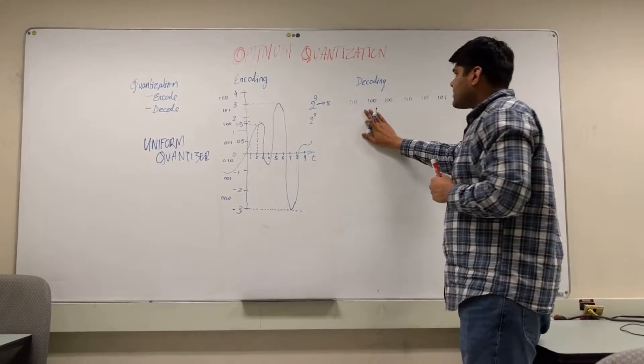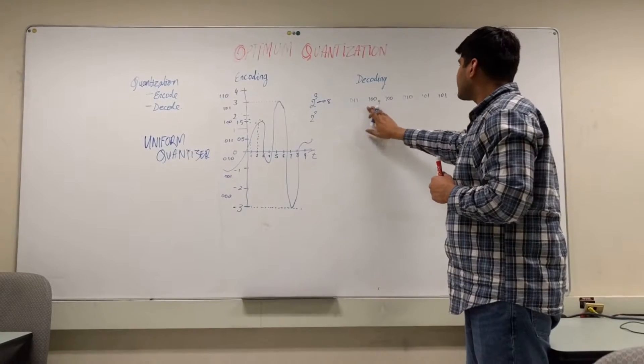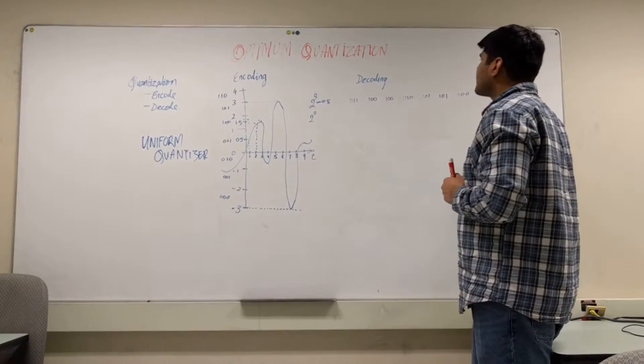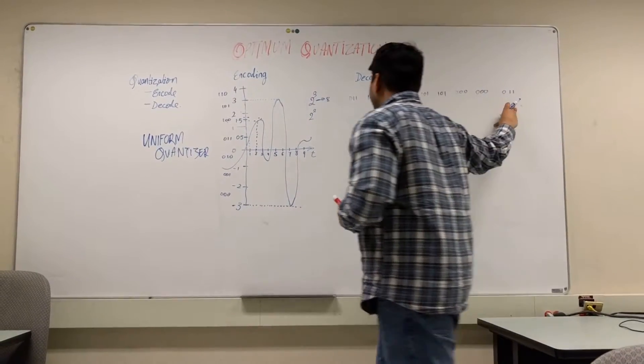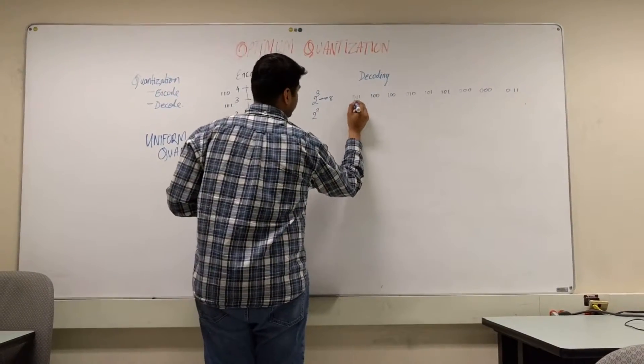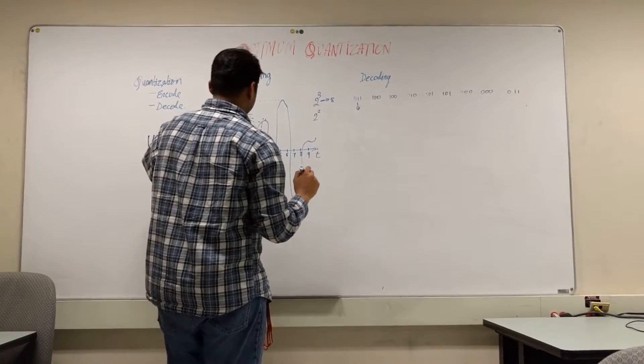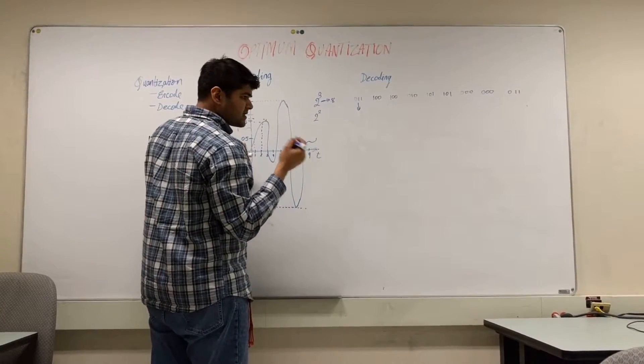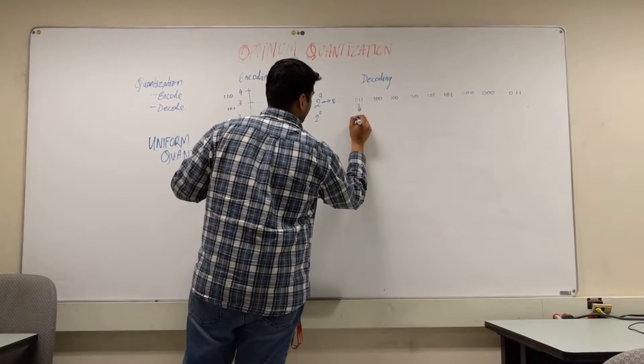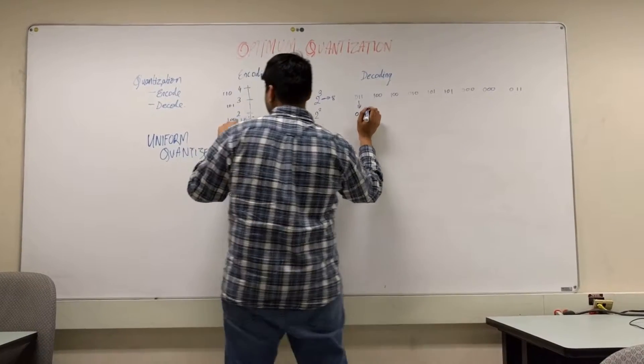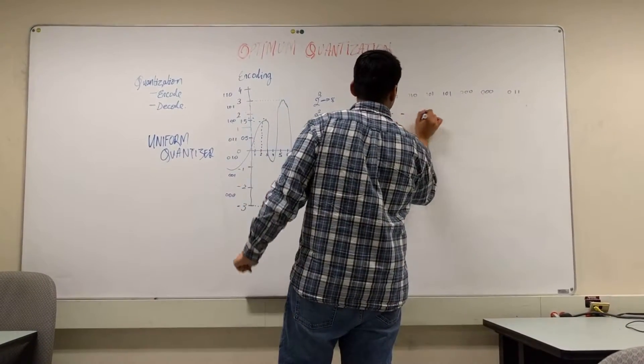During the decoding scheme itself, we see that this is the sequence of the bits that we have used to represent the particular signal. Now, all we have to do is give these the specific values associated with the centroid for the intervals. So, 0, 1, 1 would be 0.5, 1, 0, 0 would be 1.5, and so on and so forth.